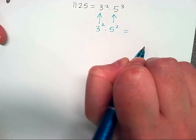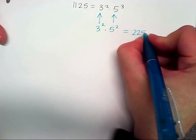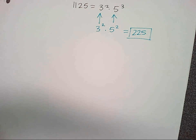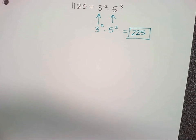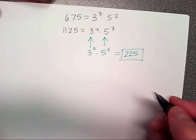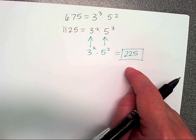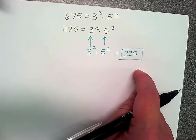What is three squared times five squared? That's nine times twenty-five, which equals 225. The GCD of 675 and 1,125 is 225. Remember: the factors that appear in both raised to the smallest power. If what I wrote before isn't making sense, try writing it in your own words.